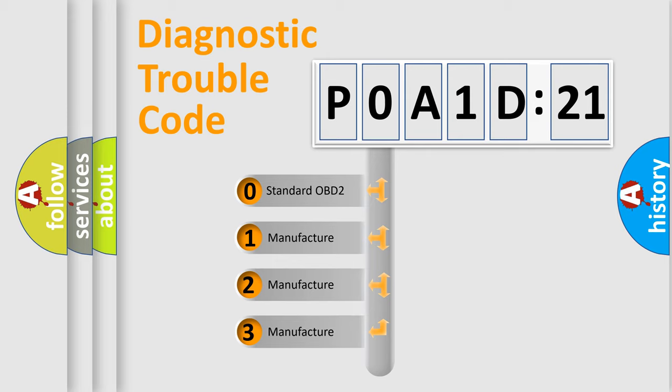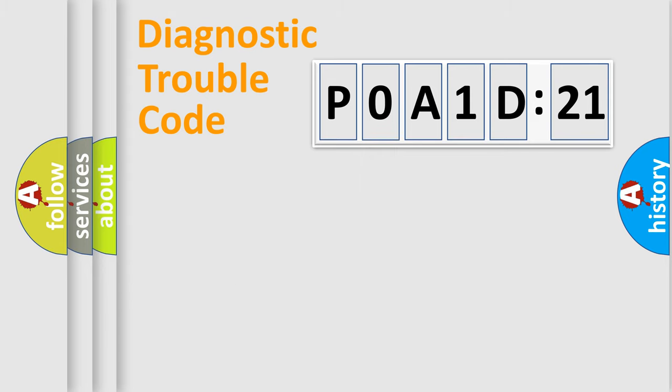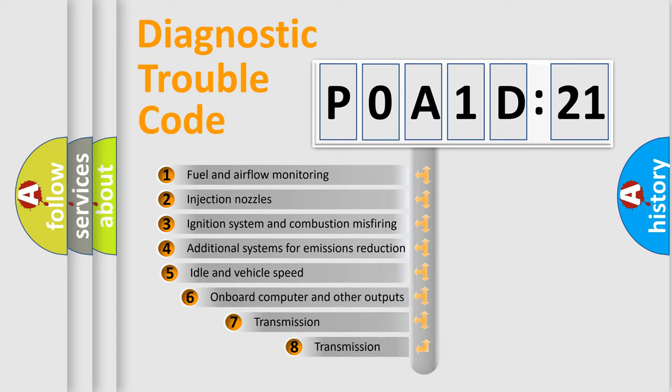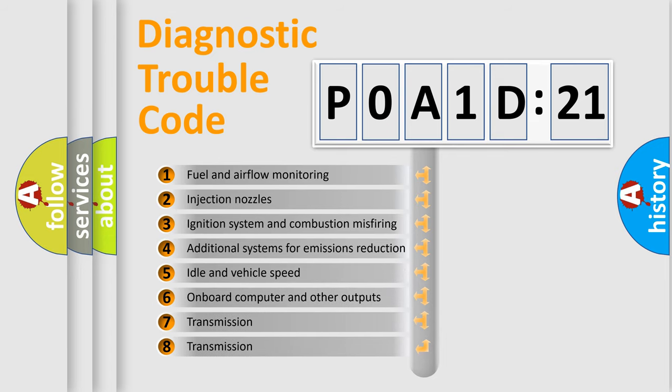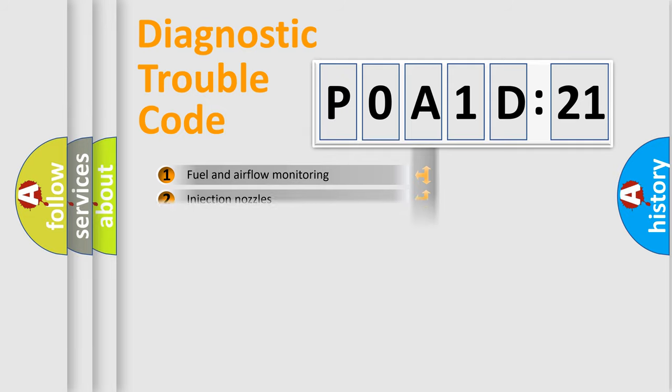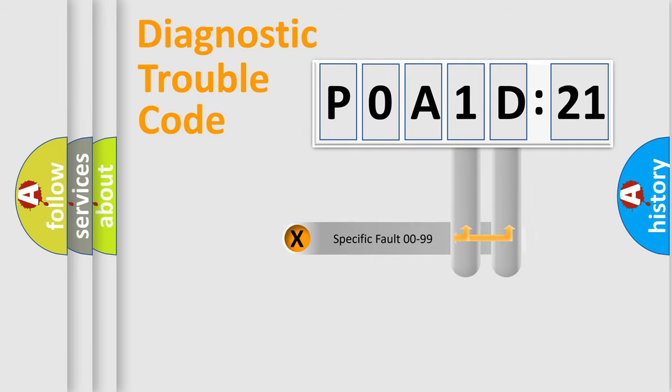If the second character is expressed as zero, it is a standardized error. In the case of numbers 1, 2, or 3, it is a manufacturer-specific error. The third character specifies a subset of errors. The distribution shown is valid only for the standardized DTC code. Only the last two characters define the specific fault of the group.